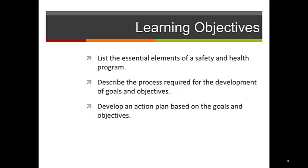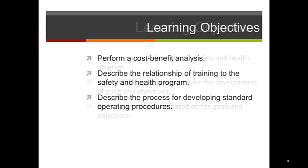There are learning objectives. List the essential elements of a safety and health program. Describe the process required for the development of goals and objectives. Develop an action plan based on the goals and objectives. Perform a cost-benefit analysis. Describe the relationship of training to the safety and health program. Describe the process for developing standard operating procedures.